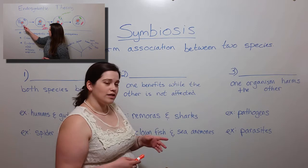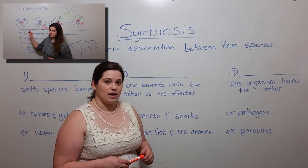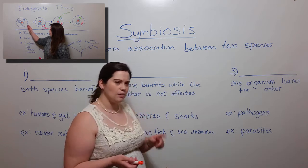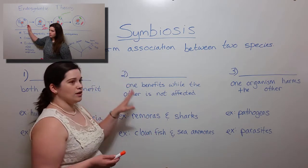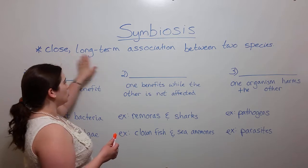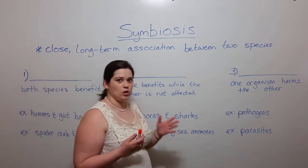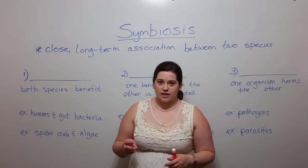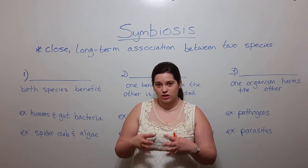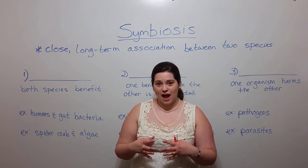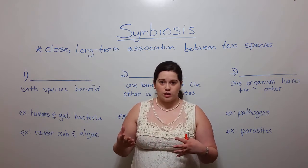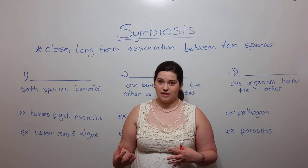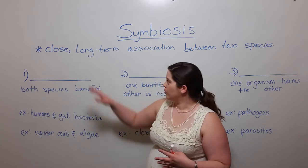If you are interested in learning more about the endosymbiotic theory, then please see my video on that topic. But now let's talk about symbiosis in particular. First, a close long-term association — what do we mean by that? Well, it means that two different species either closely associate and interact, and sometimes this means that one species even lives on or inside another species, and they do so long-term.